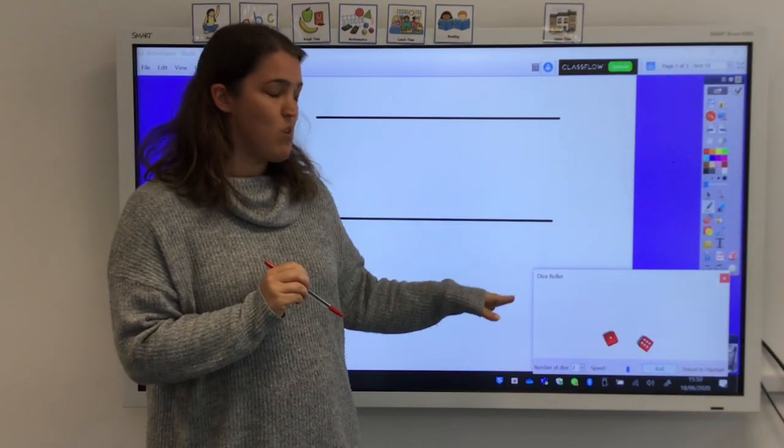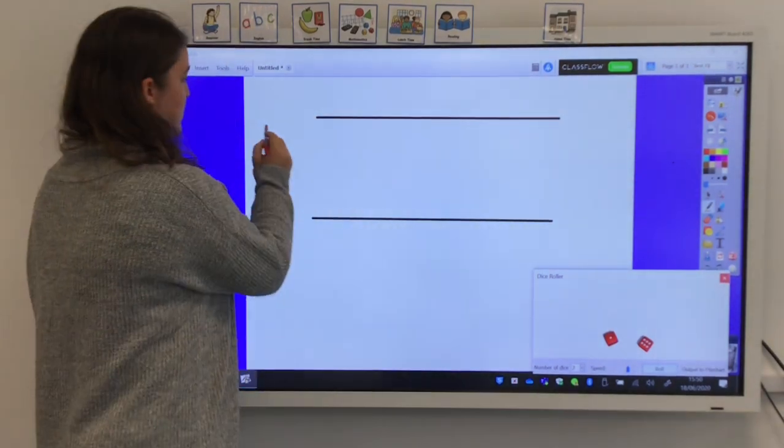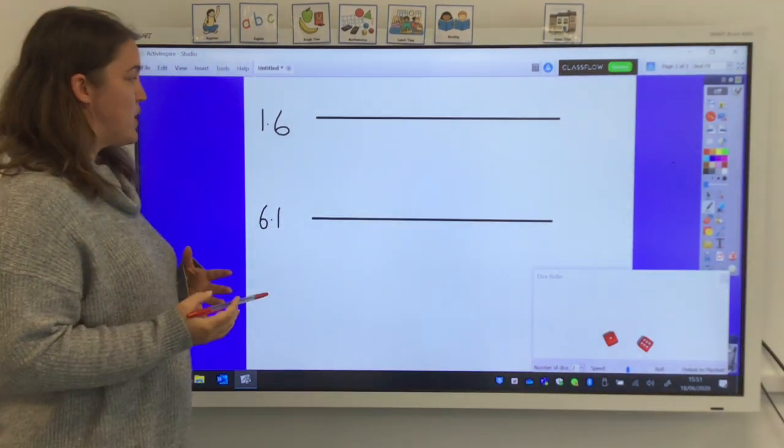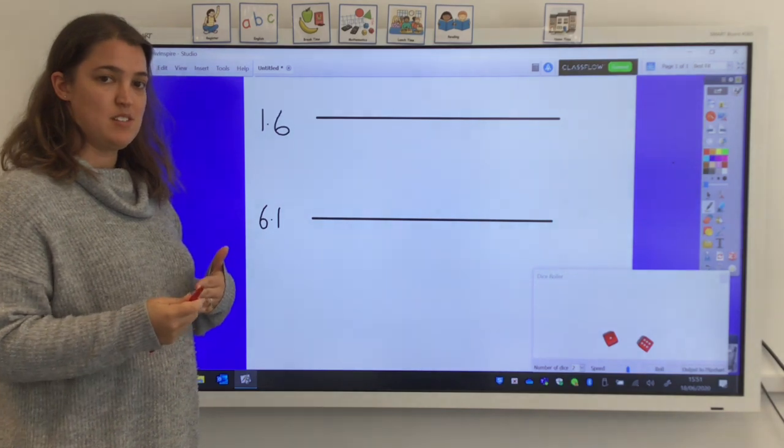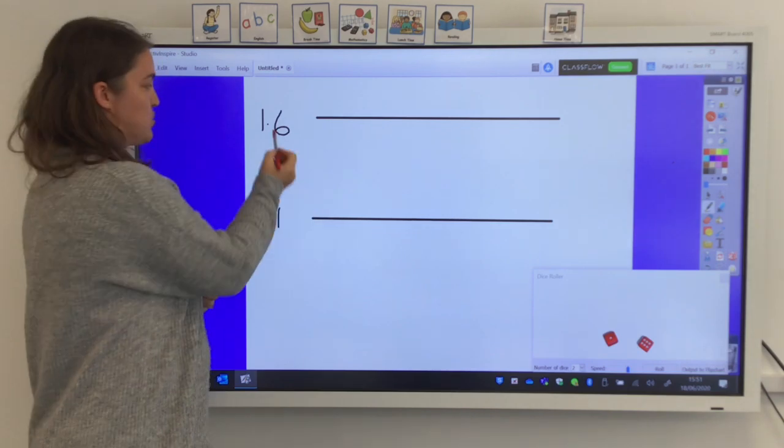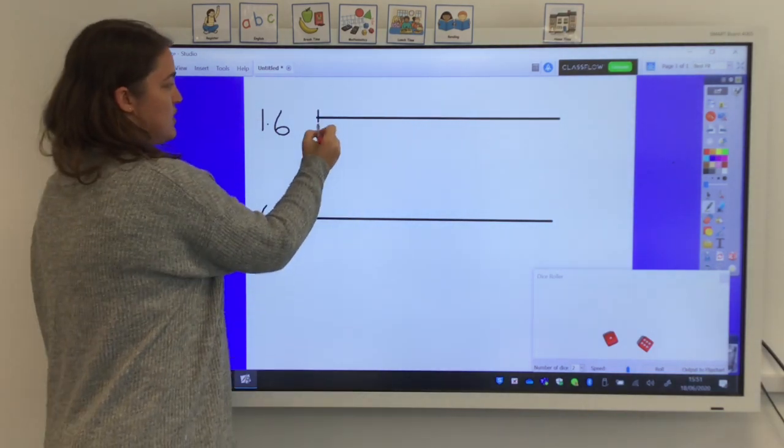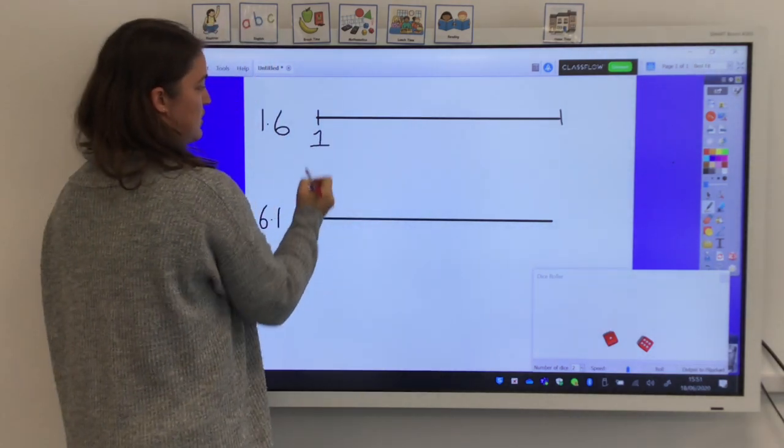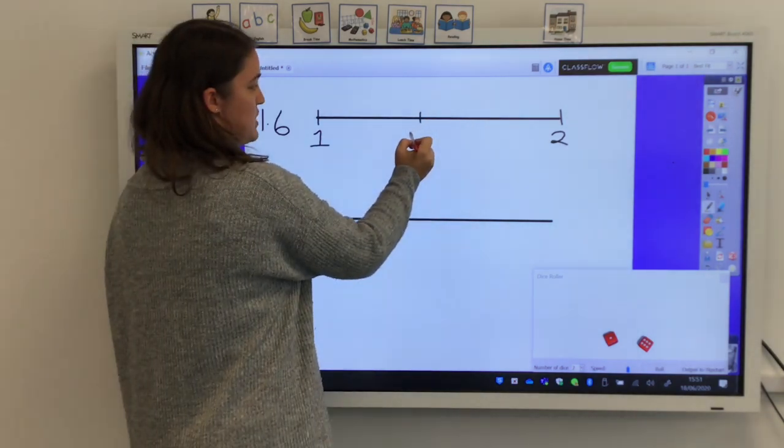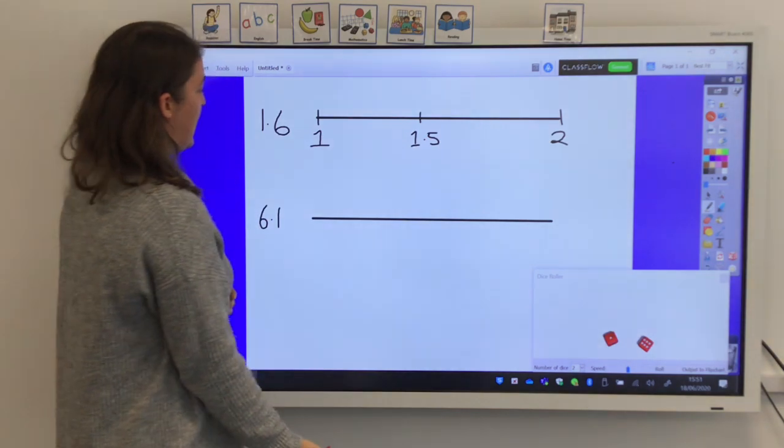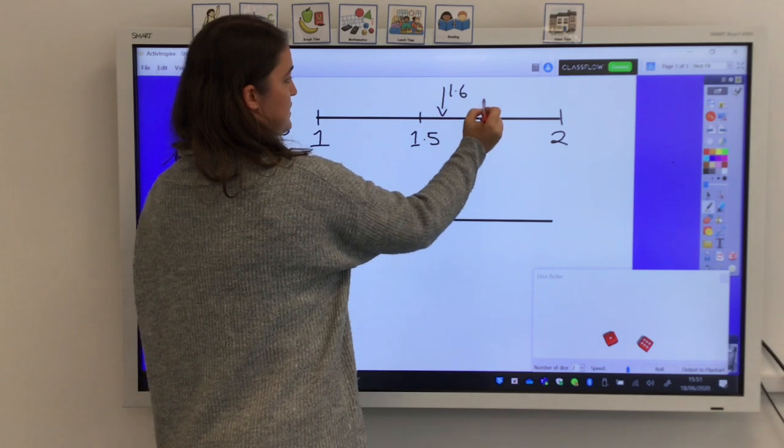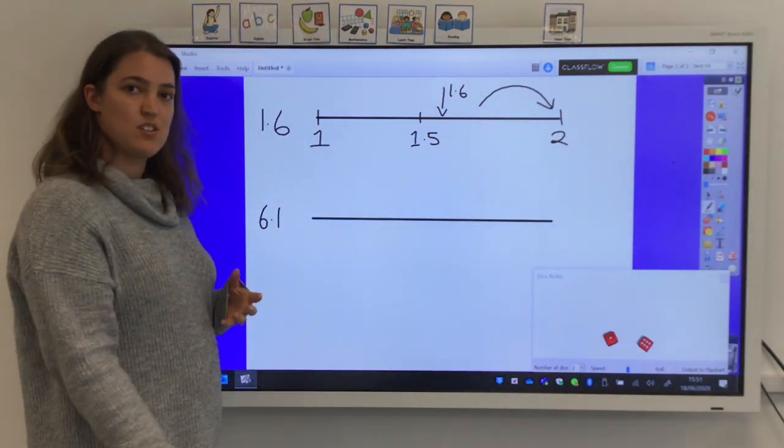So I've rolled a 1 and a 6. So I could either use this as 1.6 or 6.1. In both situations, I need to think what whole numbers this decimal lies between. So 1.6, 0.6 is part of a whole, so we've got one whole and a bit extra. So it would lie in between 1 and the next whole number, which is 2. Just as Miss Innes did, I'm going to mark the halfway point, which is 1.5. And then I'm going to add on my number, 1.6, which would be just beyond that. And I can then clearly see that it's closer to the whole number 2.